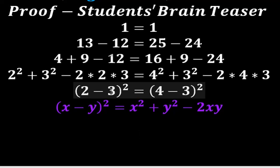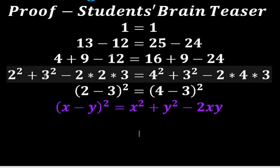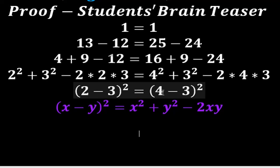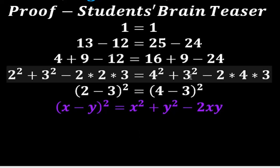On the left hand side, x is 2 and y is 3, so this gives 2 squared plus 3 squared minus 2 times 2 times 3. On the right hand side, x is 4 and y is 3, so this gives 4 squared plus 3 squared minus 2 times 4 times 3, which is x squared plus y squared minus 2xy.